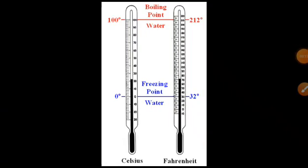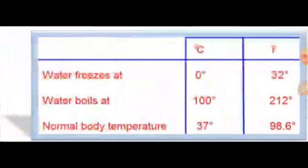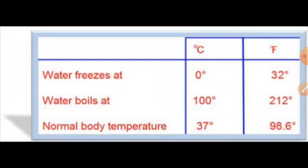The freezing and boiling points of water are given in both Celsius and Fahrenheit scales. On the Celsius scale, the boiling point of water is 100 degree Celsius and the freezing point is 0 degree Celsius. On the Fahrenheit scale, the boiling point is 212 degree Fahrenheit and the freezing point is 32 degree Fahrenheit. So water freezes at 0 degree Celsius or 32 degree Fahrenheit, and boils at 100 degree Celsius or 212 degree Fahrenheit. The normal body temperature of a human being is 37 degree Celsius or 98.6 degree Fahrenheit.